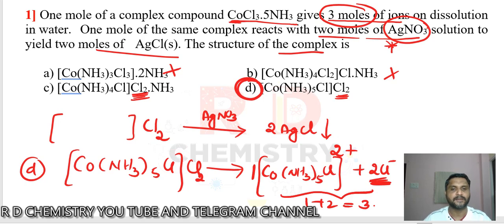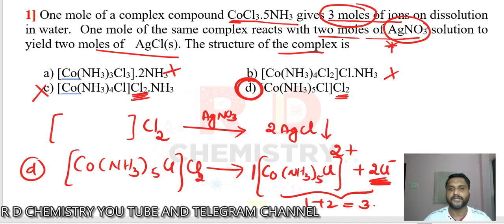Option C does not give 3 ions, so the answer is D.